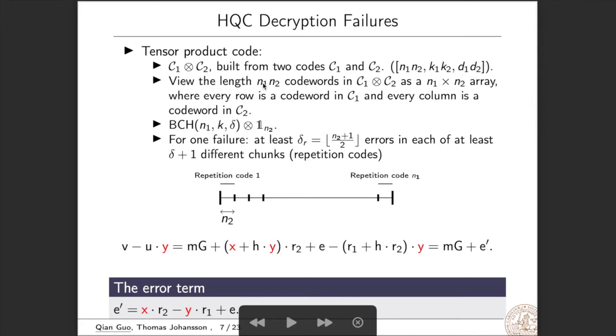So we can view the length n1 times n2 codewords as the n1 times n2 array, where every row is a codeword in C1 and every column is a codeword in C2. In HQC, they pick C1 to be a BCH code and C2 to be a repetition code. So if we write this n1 times n2 codeword in a vector, then we see that we have n1 repetition codes with length n2. So for one decryption failure, we need to have at least delta_r errors in each of at least delta plus one different chunks. So we see that error term e prime is x times r2 minus y times r1 plus e. Here, because the field characteristic is 2, so the summation and the subtraction operation are all the XOR operations.